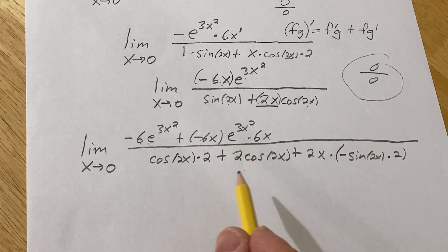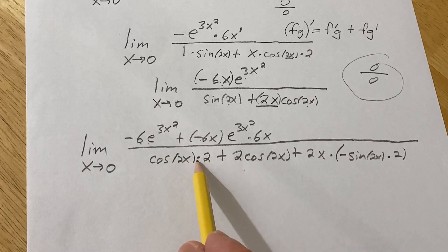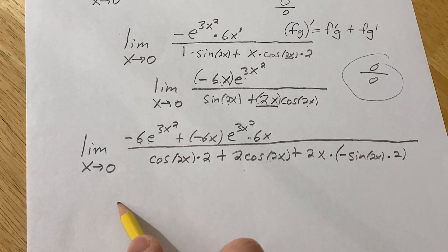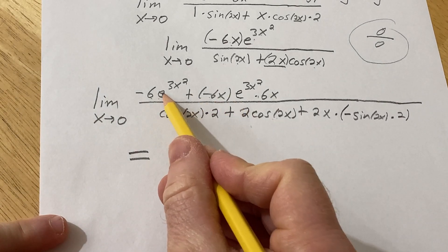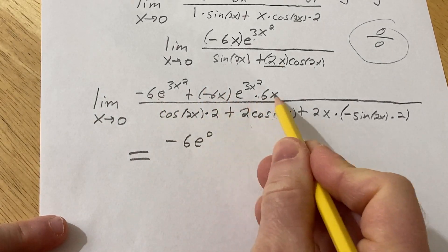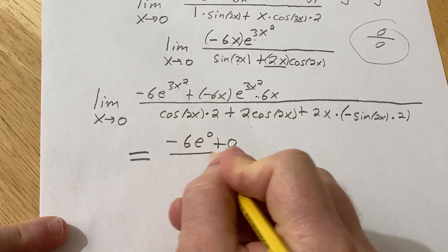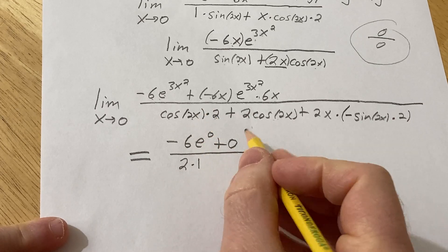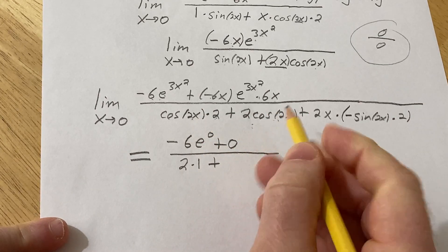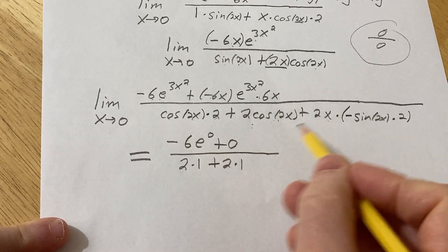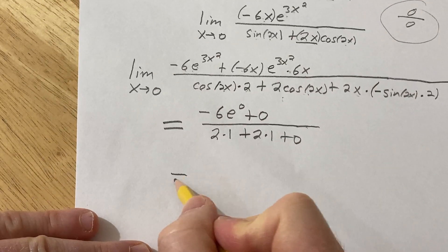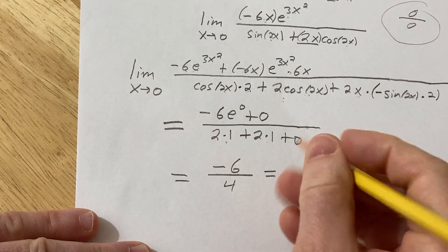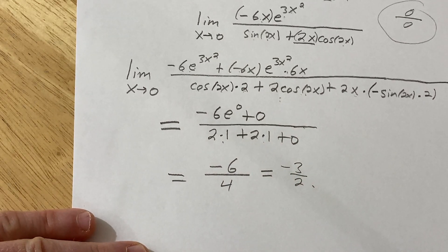At this point we can plug in 0, because the denominator won't be zero — cosine of 0 is 1. Dropping the limit sign and plugging in 0: the numerator gives negative 6 times e to the 0, which is negative 6, since the other term has an x and goes to 0. The denominator gives 2 times cosine 0, which is 2 times 1, plus 2 times 1, equaling 4. So the answer is negative 6 over 4, which equals negative 3 over 2.